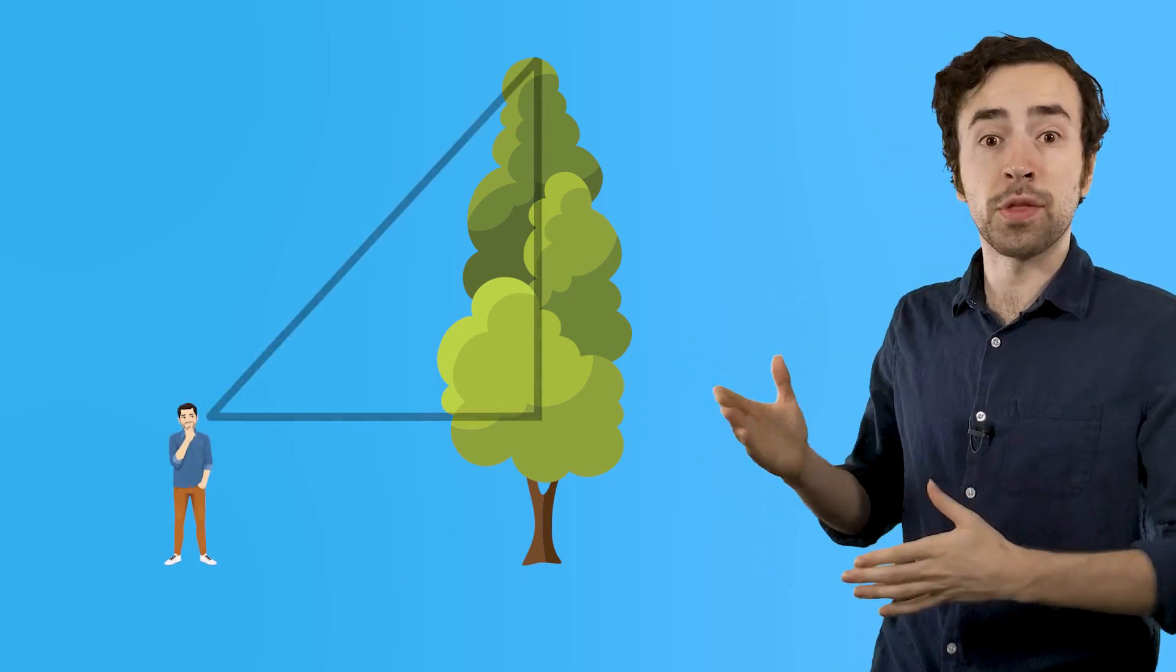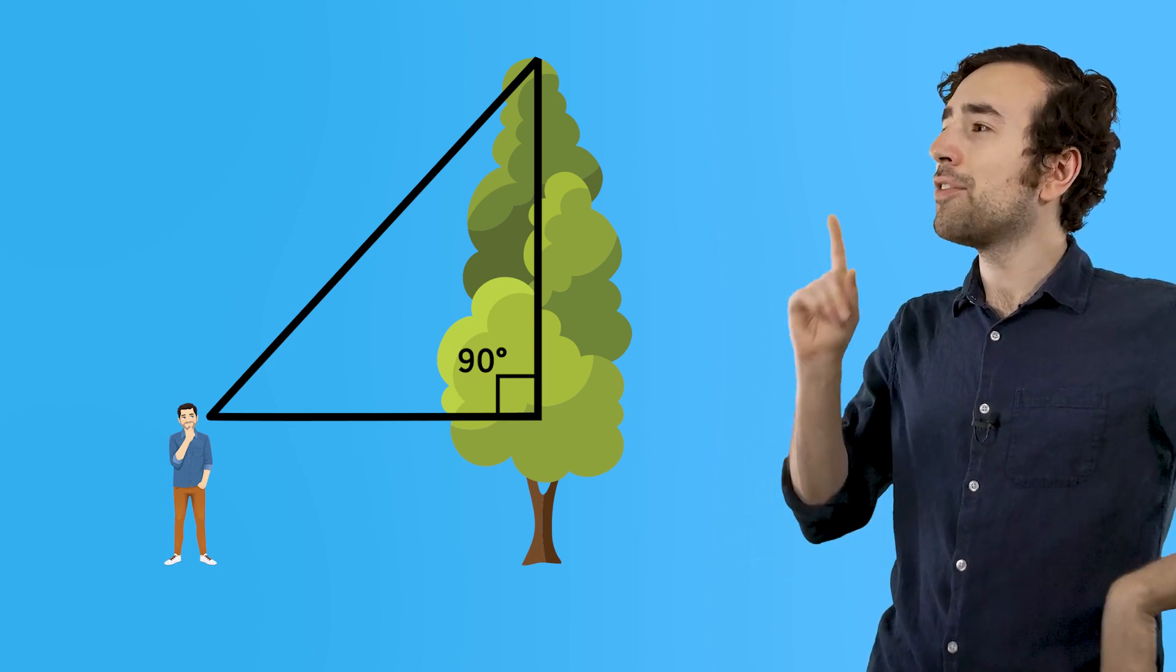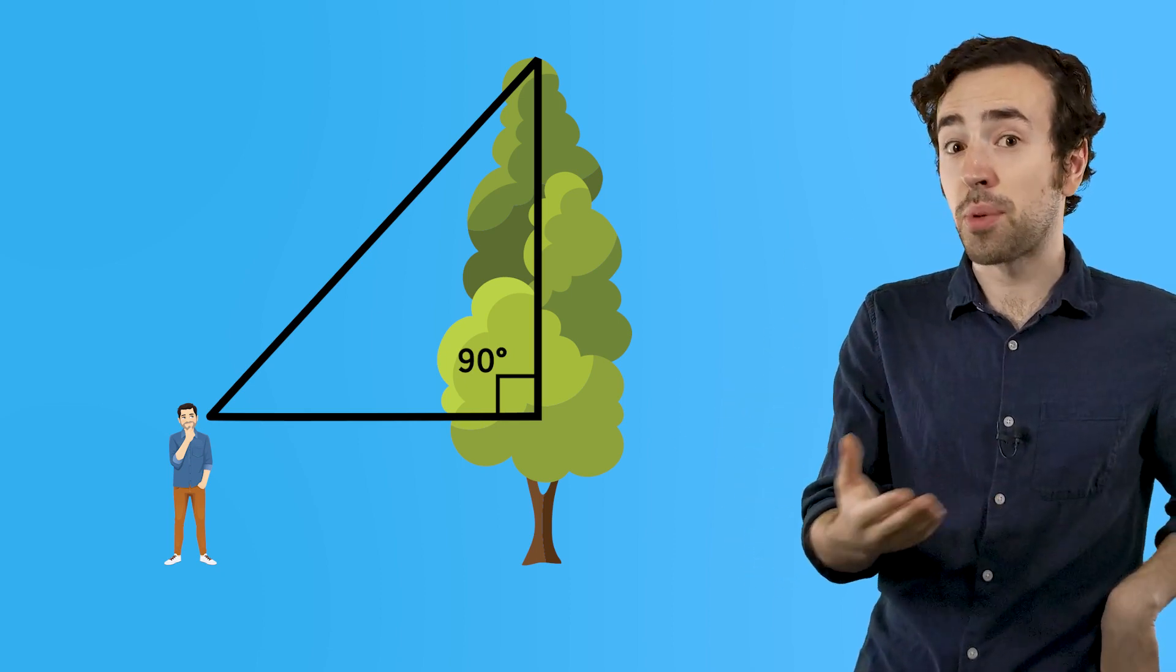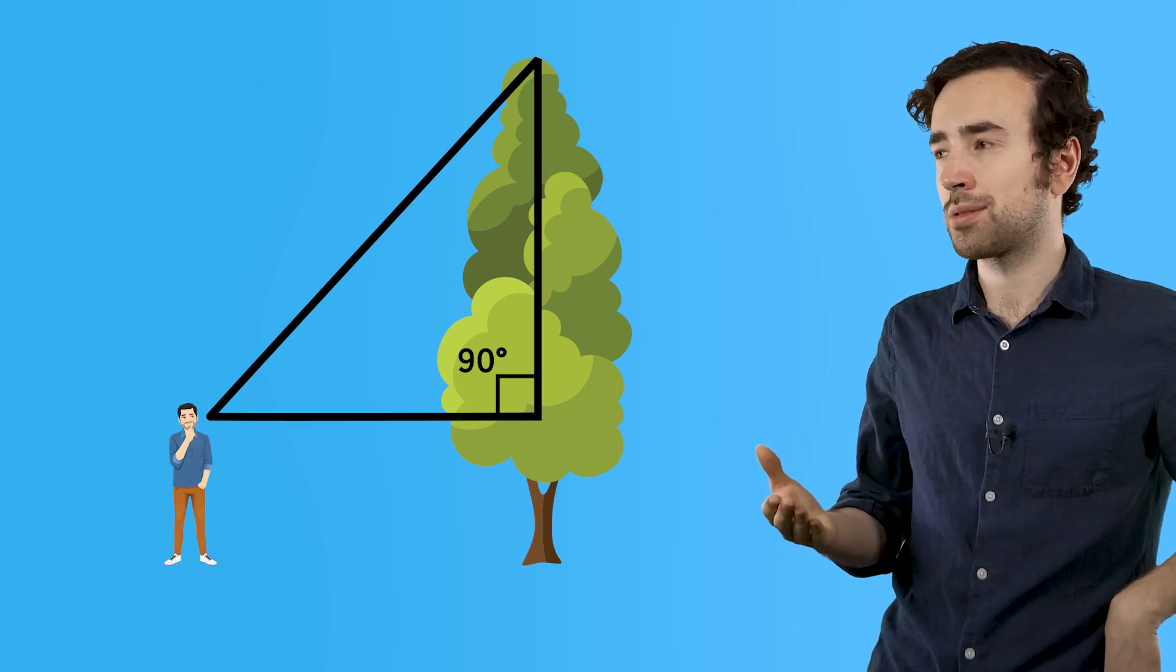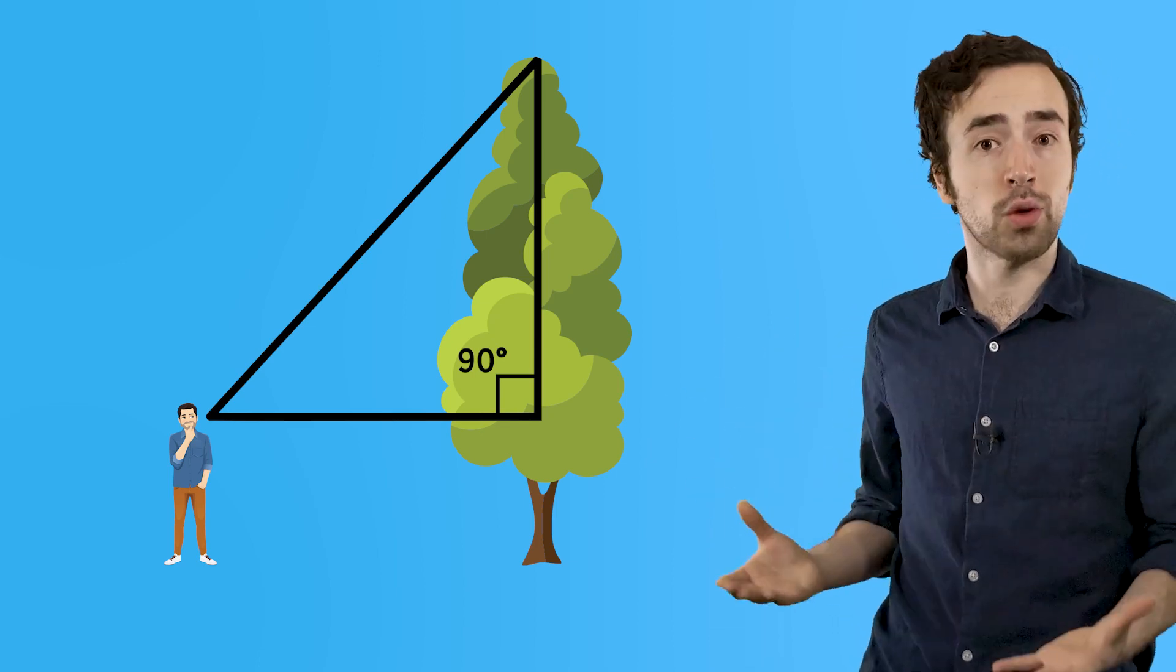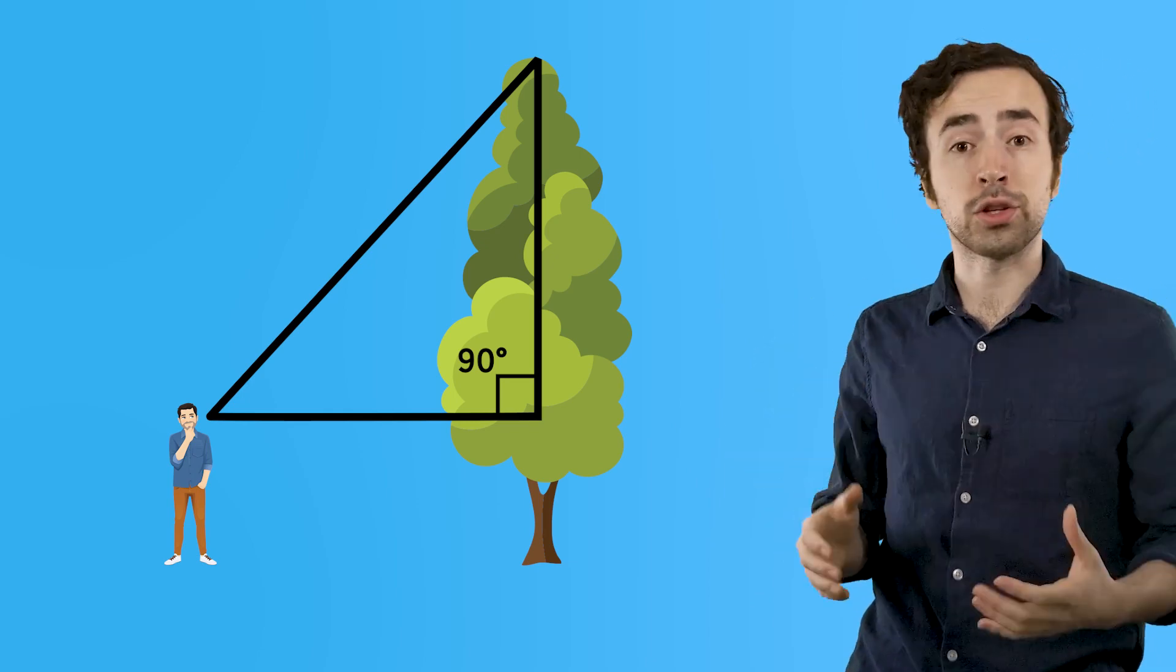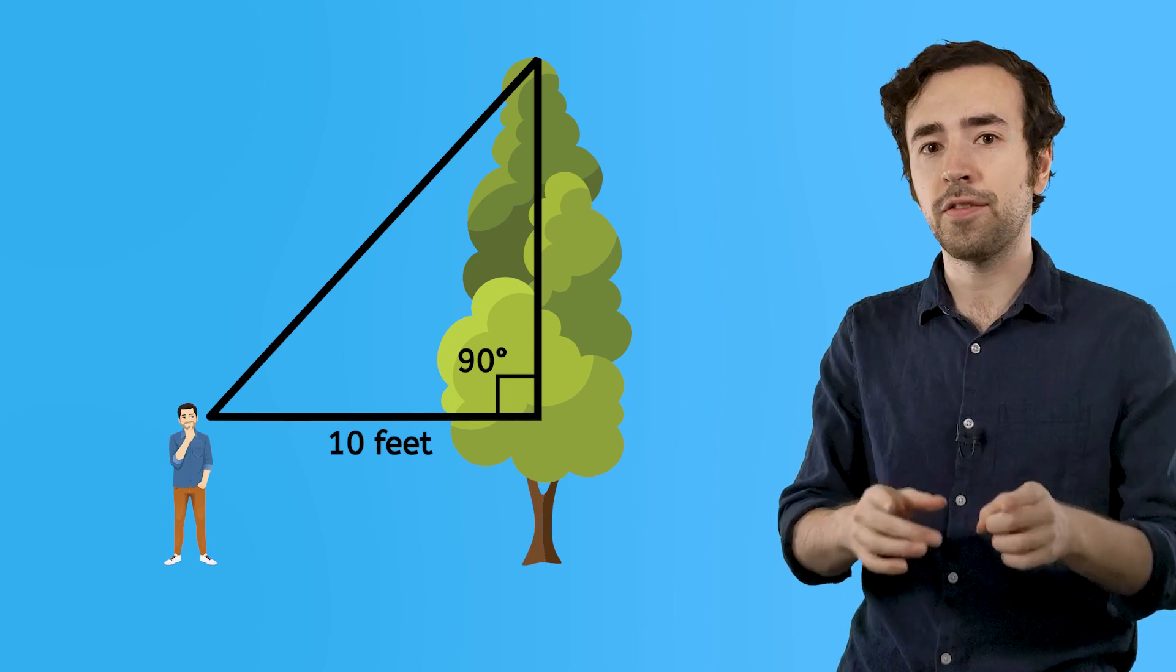For instance, I knew that I can make a right triangle by using the tree and myself like this because, you know, the tree forms a right angle with the ground. I figured that we could use the Pythagorean theorem at first because it's an equation that relates the lengths of the sides of a triangle, right? So I measured the distance between myself and the tree and found that it was 10 feet.